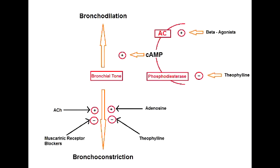What is the mechanism of action of ipratropium and tiotropium? The mechanism of action of ipratropium is to competitively block the muscarinic receptors. The mechanism of action of tiotropium is primarily to block the M3 muscarinic receptors.